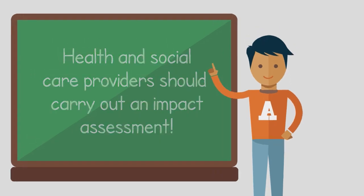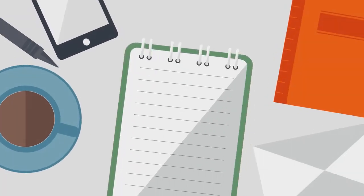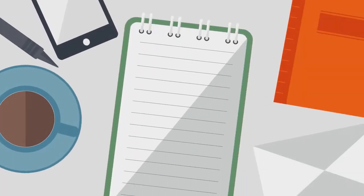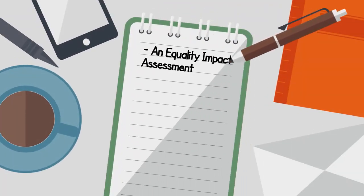An impact assessment will normally cover a number of specific areas. For example, an Equality Impact Assessment, or EQIA. This helps organisations to consider the needs of different parts of a community and ensure that no group of people is unfairly affected by the changes.